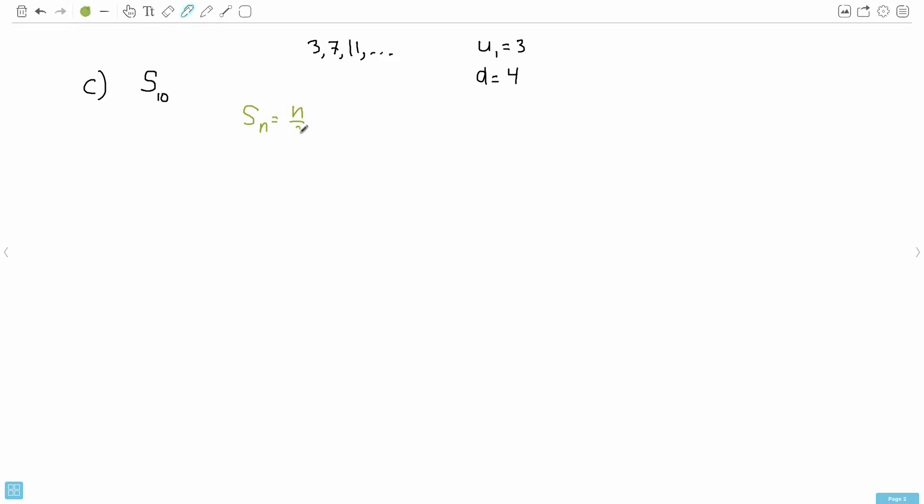So Sₙ equals n over 2 times 2U₁ plus n minus 1 times D. It looks a lot like the nth term of an arithmetic sequence. That's this U₁ plus n minus 1 D. So it has a 2 in front and then it has n over 2. So this here's the equation we're going to be using.